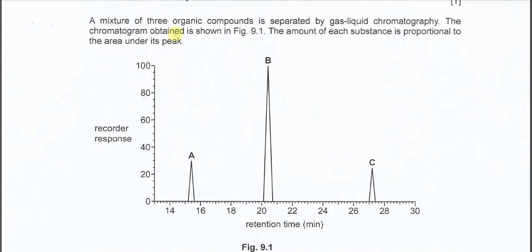A mixture of three organic compounds is separated using gas-liquid chromatography. Figure 9.1 shows the chromatogram with three different peaks for A, B, and C. The area under each peak represents the amount of each substance.